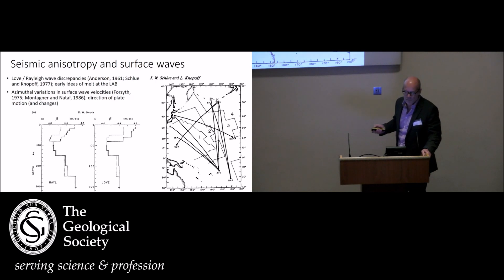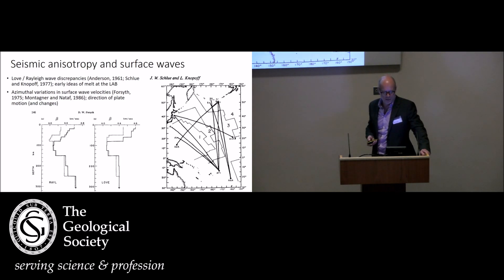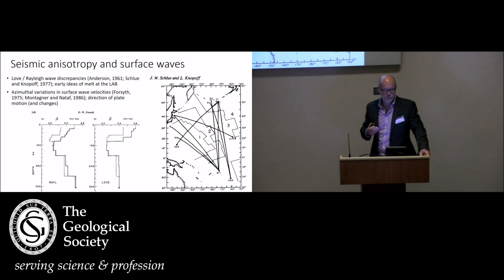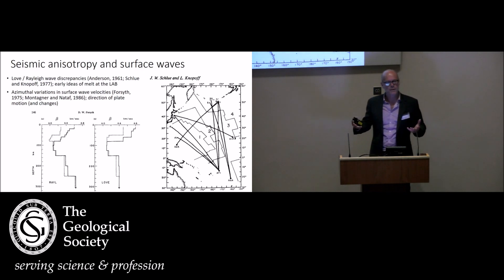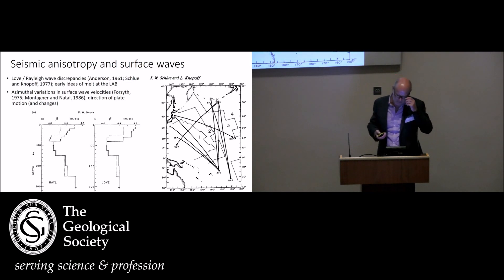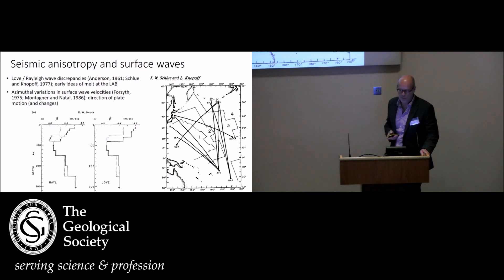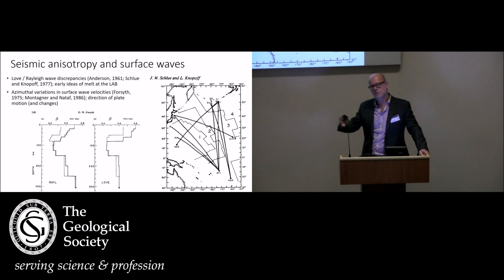Surface waves are also a good way of looking at anisotropy. One obvious indicator is the Love-Rayleigh wave discrepancy — different velocities from Love and Rayleigh waves. Don Anderson showed this working on wave propagation in ice in Greenland. Schlough and Knopf used this to map depth variations in anisotropy and argued there's aligned melt near what we now call the LAB in the asthenosphere — an idea coming back into favor. Forsyth noted the anisotropy was strong down to about 100 kilometers depth and could relate directional velocity variations to changes in plate motion in the Pacific.